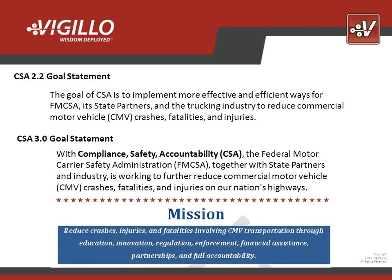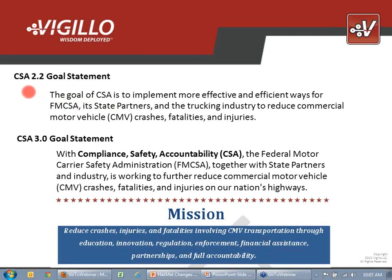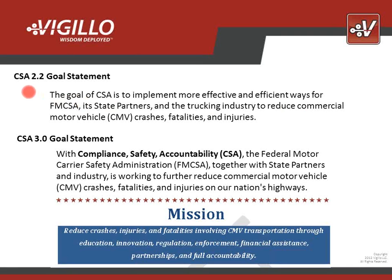As we begin this analysis, it's good to lay a foundation and revisit what CSA was designed, architected, engineered, and rolled out to do — what is its mission statement? First, what was the past — CSA 2.2, the methodology in place today that everybody is currently being measured by. That particular methodology's published goal statement reads in summary that it is the goal of CSA to reduce crashes, fatalities, and injuries on our nation's highways. When 3.0, the new proposed methodology, was published, it also contains a goal statement which, except for a very few small wording changes, remains focused on reducing crashes, fatalities, and injuries on our nation's highways.